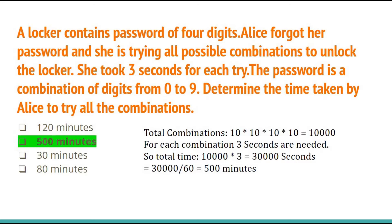The first question: a locker contains a password of 4 digits. Alice forgot her password and is trying all possible combinations to unlock the locker. She takes 3 seconds for each try, and the password is a combination of digits from 0 to 9. Since we have 10 digits, total combinations for a 4-digit password will be 10 × 10 × 10 × 10 = 10,000. Total time = 10,000 × 3 = 30,000 seconds = 500 minutes. Option B, 500 minutes, is the right answer.